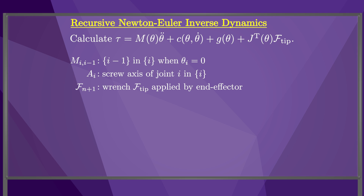Finally, to model gravity, we define the acceleration of the base of the robot, v0_dot, to be a linear acceleration opposite the gravity vector. This is because gravity is indistinguishable from upward acceleration. With these definitions, the forward iterations from frame 1 to frame n can be written as follows.